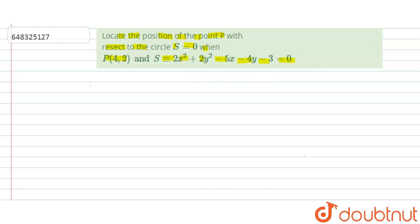So let's start solving this question. What is given to us? We have to find out the position of this point (4,2) with respect to the circle S = 2x² + 2y² - 5x - 4y - 3 = 0.